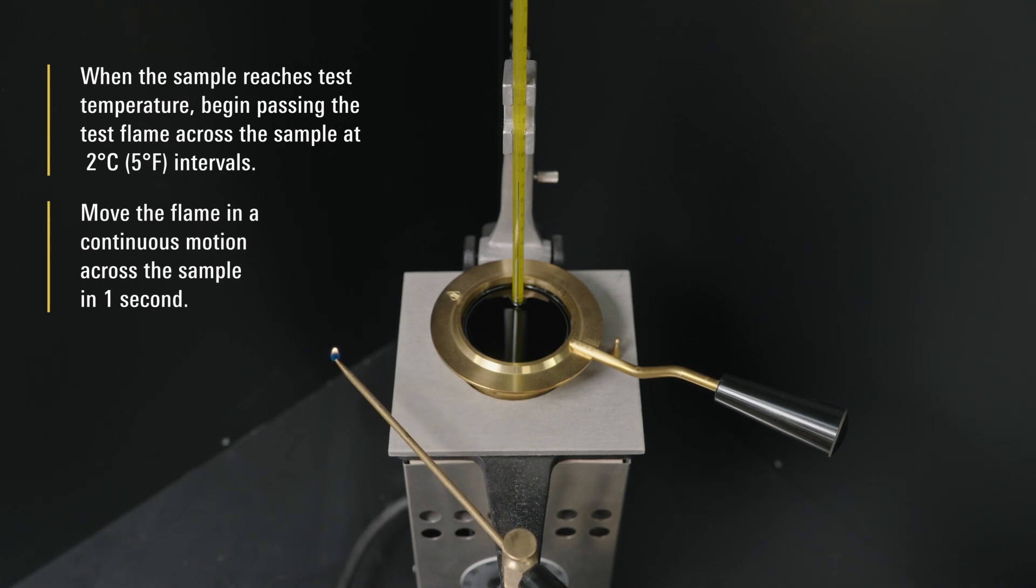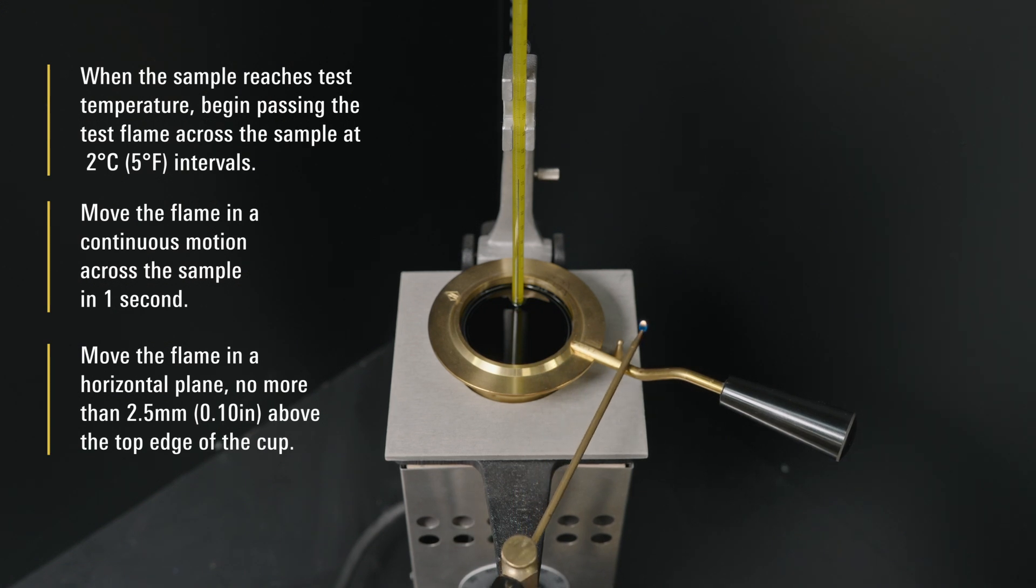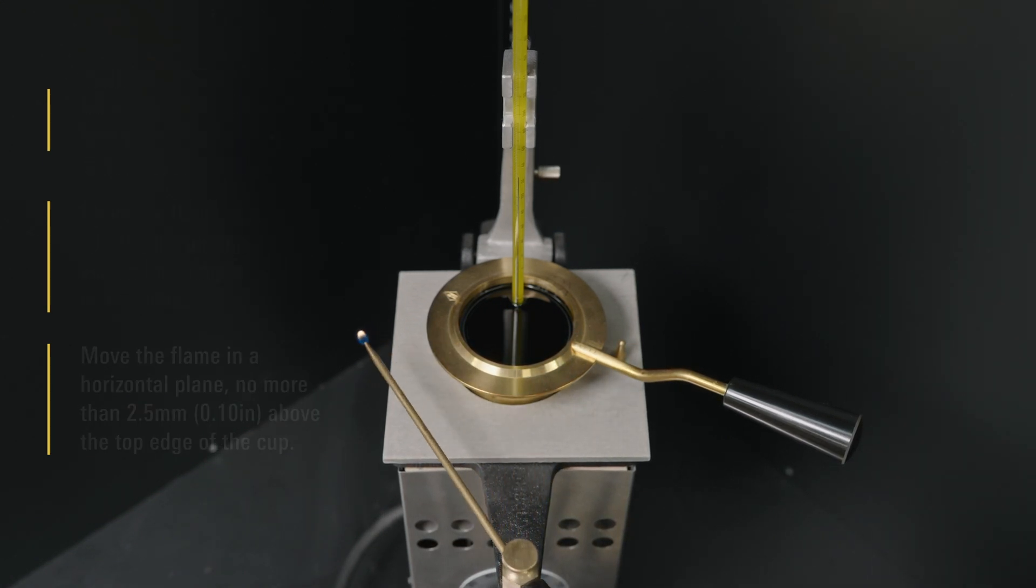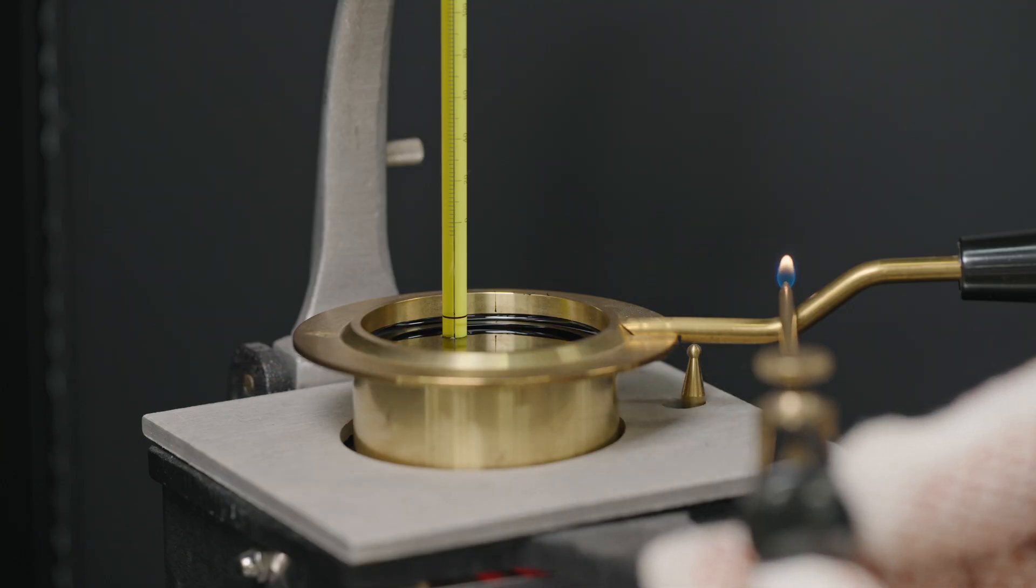Move the flame in a continuous motion across the sample in 1 second. Move the flame in a horizontal plane no more than 2.5 mm above the top edge of the cup. Move the flame in one direction for each pass, reversing direction for the next pass.